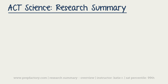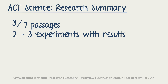Research summary is the first type of passage we're going to be dealing with. It is three out of every seven passages on the test, making it one of the two most important types of science passages. The idea with a research summary is that you're going to have a couple of different experiments being run, and then results from those experiments. Your job is to analyze the different experiments, figure out what they did, why they did it, and how they did it.